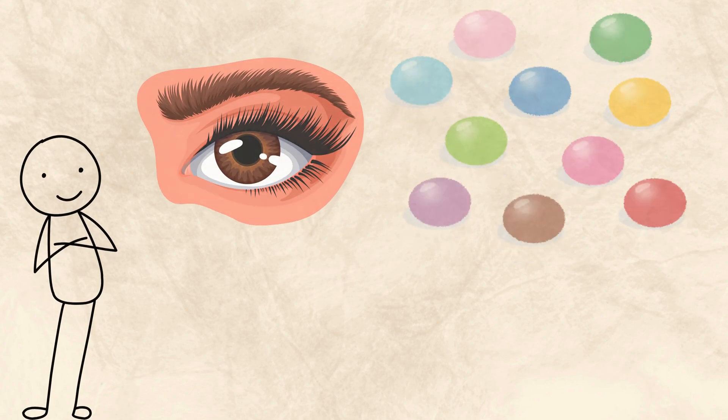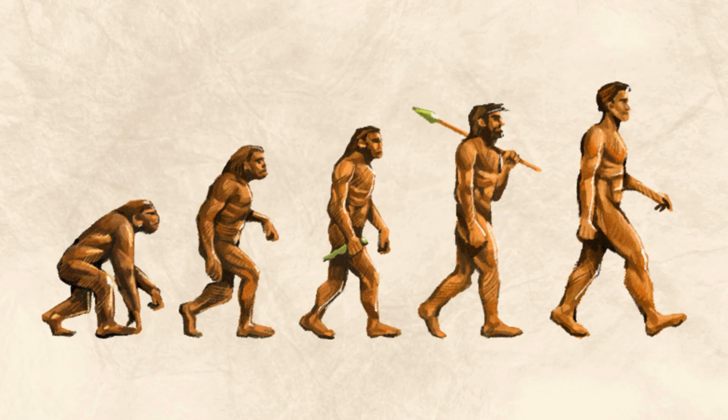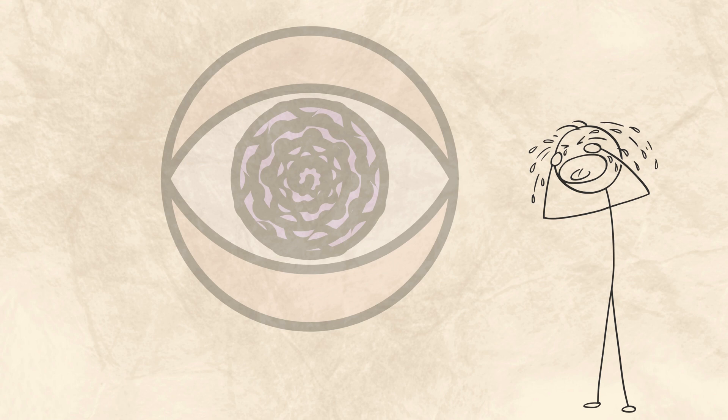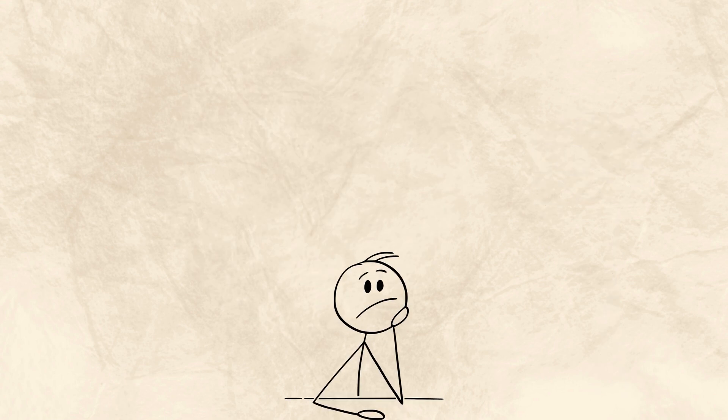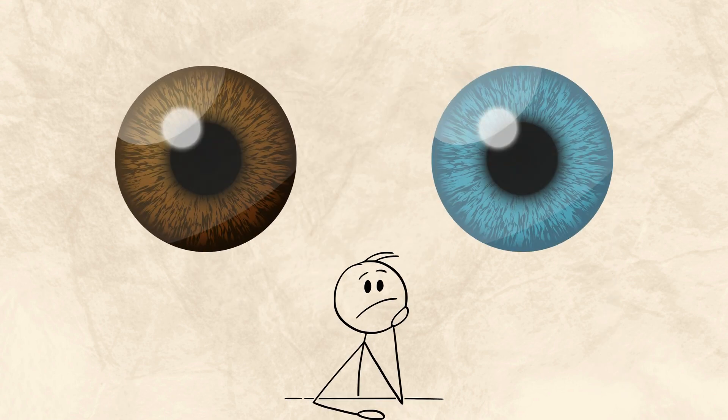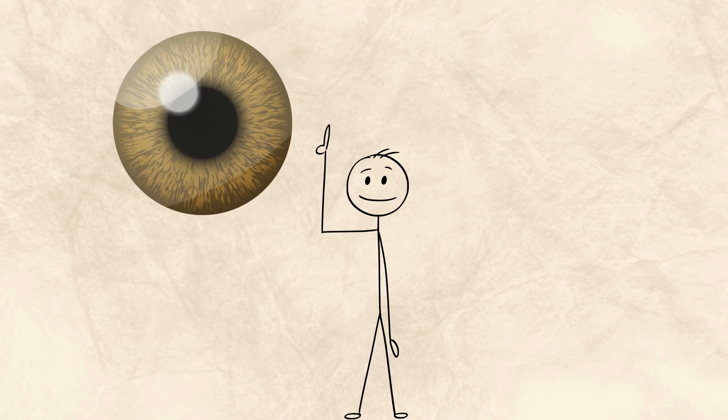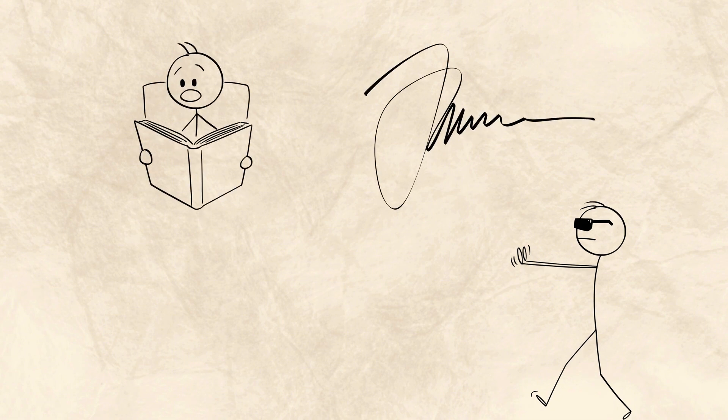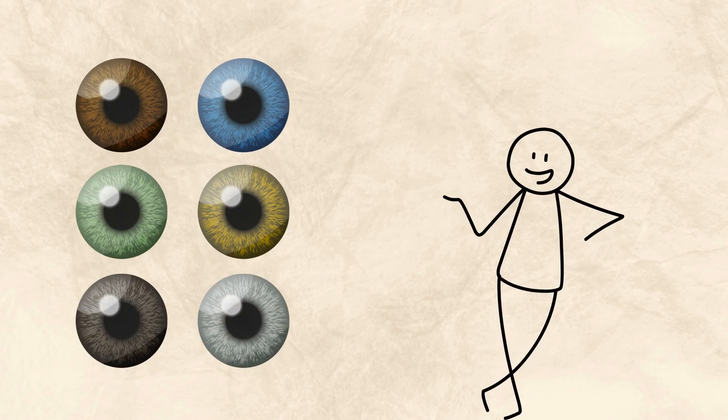Your eye color says more than you think. It can trace your ancestry, reveal a mutation that changed the course of human history, and turn light itself into illusion. Maybe you've always thought your eyes were simply brown or blue, but what if they were actually gold or gray, or something that changes with your mood? Eyes aren't just for seeing. They are signatures, stories, and sometimes even secrets. Today I'll explain every human eye color in this video.